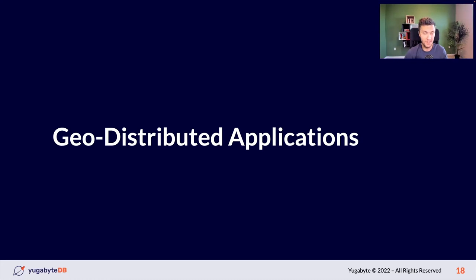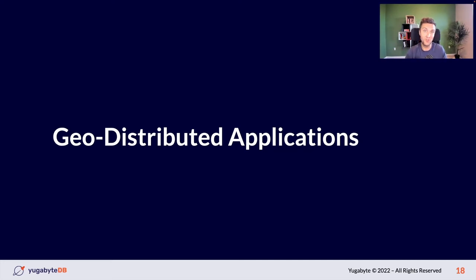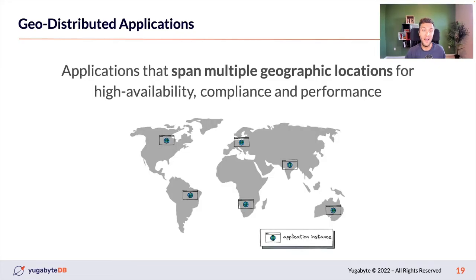Let's remind ourselves what we have: we're building applications used by a global user base, we want to provide the same speed and latency for all users, and we want to comply with data regulatory requirements — all achievable with global cloud infrastructure. Geo-distributed applications are apps that span multiple geographic locations for high availability, compliance, and performance.